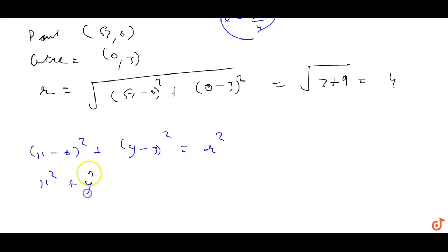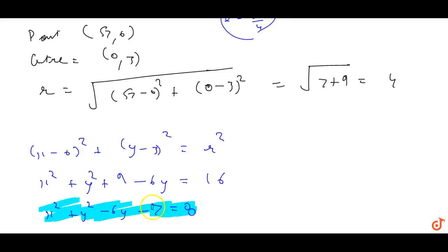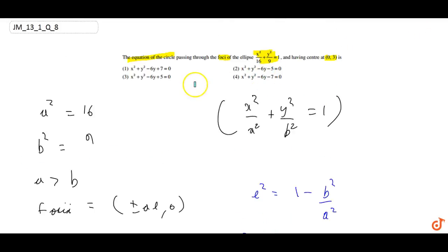Expanding: x² + y² − 6y + 9 − 16 = 0, which gives x² + y² − 6y − 7 = 0. This is the equation of the circle. Checking the options, the correct answer is x² + y² − 6y − 7 = 0.